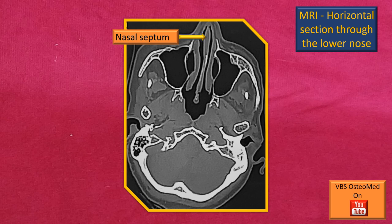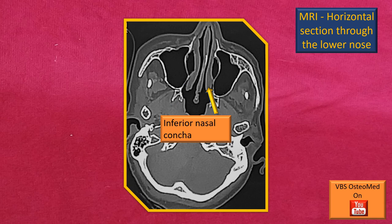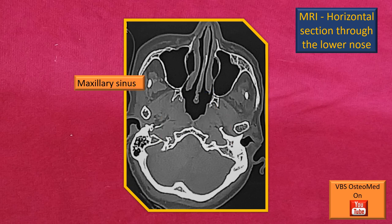This is an MRI horizontal section through the lower nose. On either side of the nasal septum there is a long turbinate — this is the inferior nasal concha — meaning the level is low, below the orbit. Therefore, the cavity on either side of the nasal cavity at this level is the maxillary air sinus. At this level the ethmoidal sinus is too high and not visible. The bone visible in the septum here is the vomer bone.